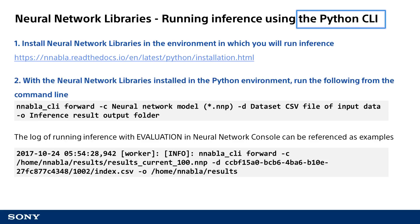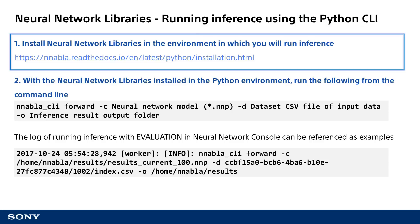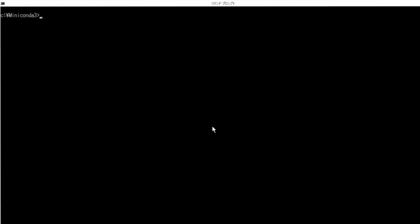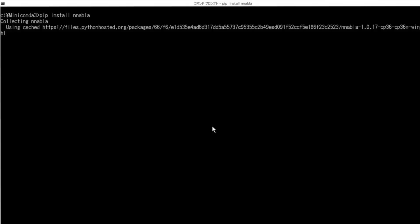Now I would like to go over the process to run inference using the Neural Network Libraries via the command line interface, which is called CLI. First, you need to install the Neural Network Libraries in the environment in which you will run inference. The easiest way to install the Neural Network Libraries is to run the pip install nnabla command in the environment in which Python is installed.